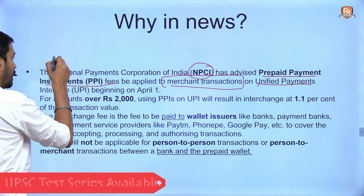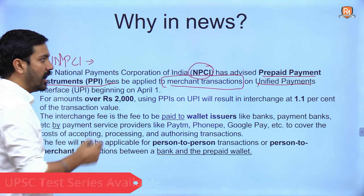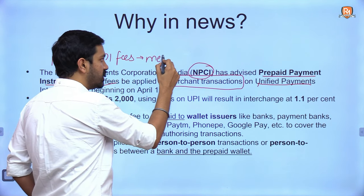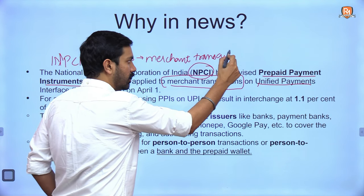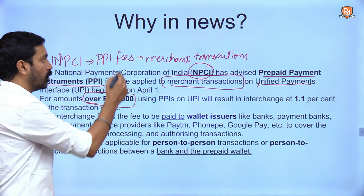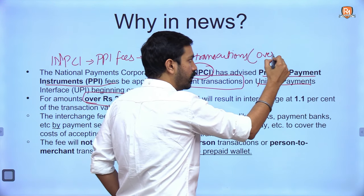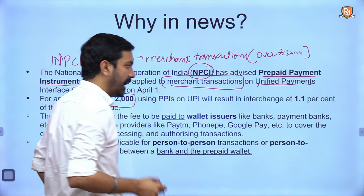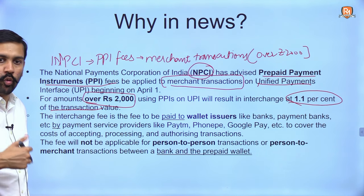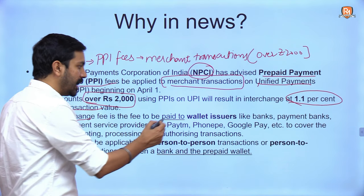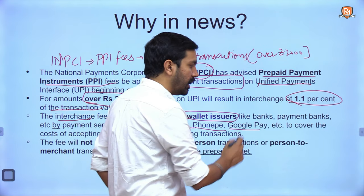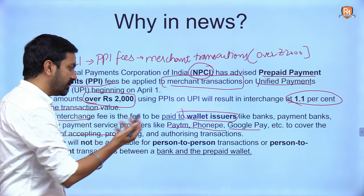NPCI has levied PPI fees over merchant transactions. It is to be levied for amounts that are over rupees 2000, at 1.1% of the transaction value. The fee is to be paid to wallet issuers — for example, Paytm, PhonePay, Google Pay, etc. — that will basically be bearing the cost of acceptance and processing the fees.